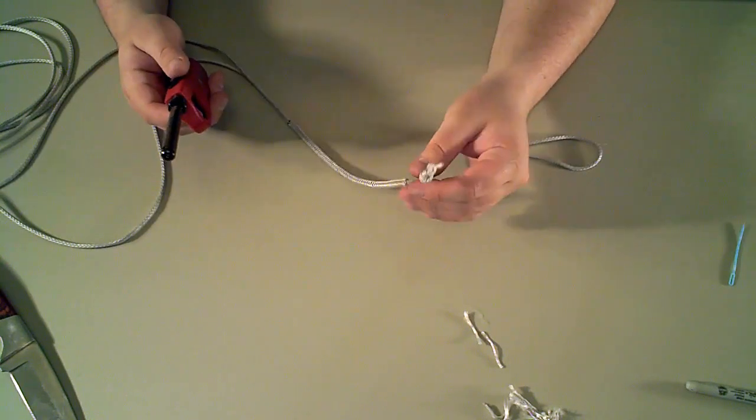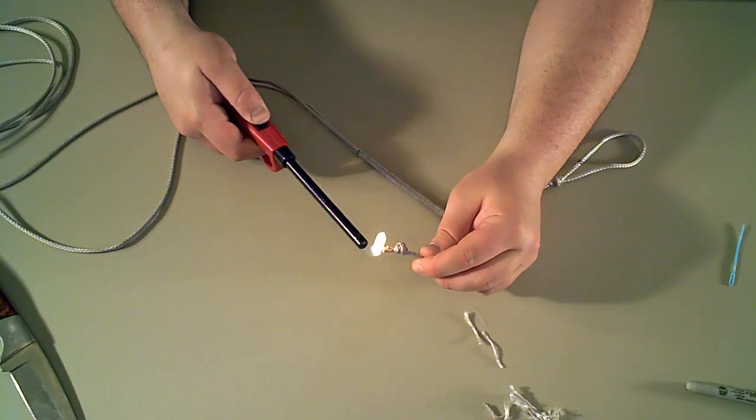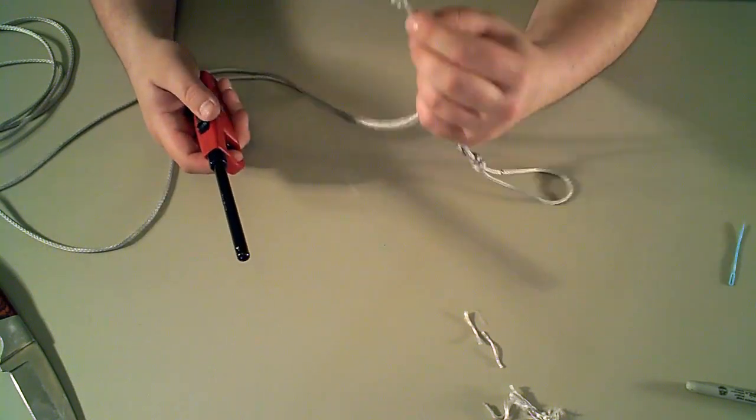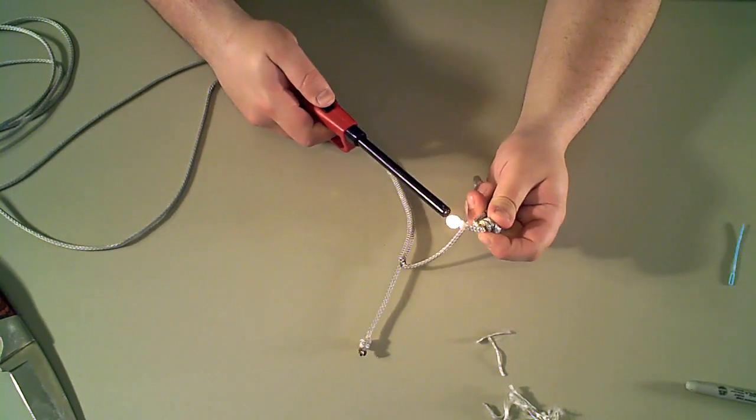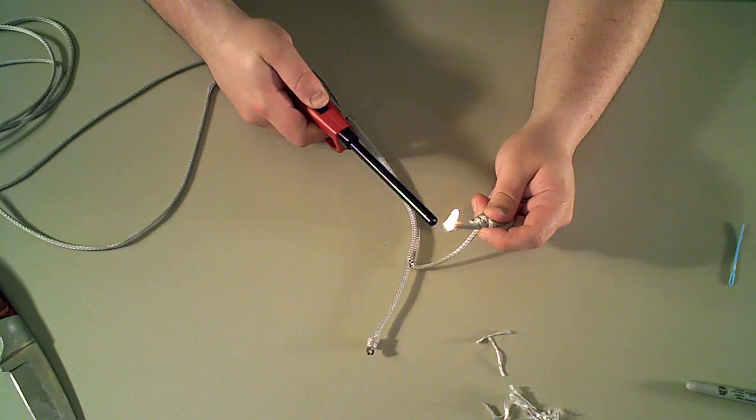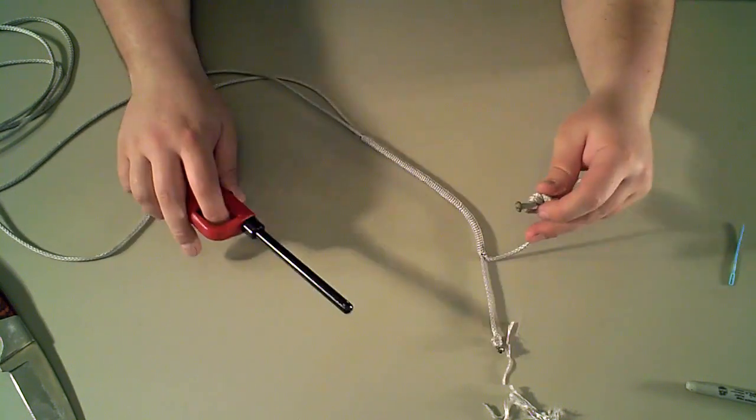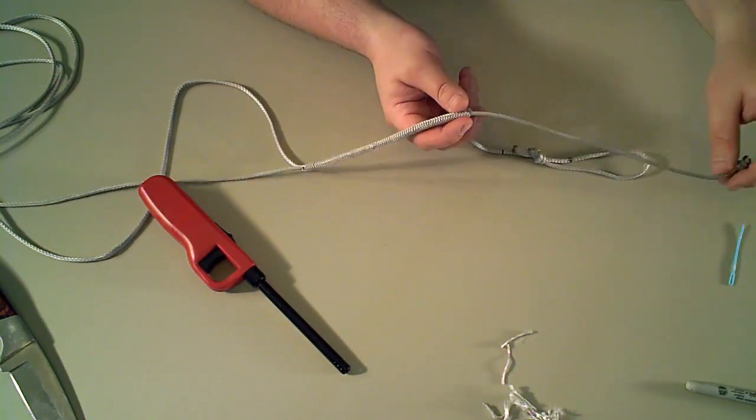And this is unnecessary since both ends are behind knots, but I like to go ahead and singe the ends here. And that is the completed whoopie sling.